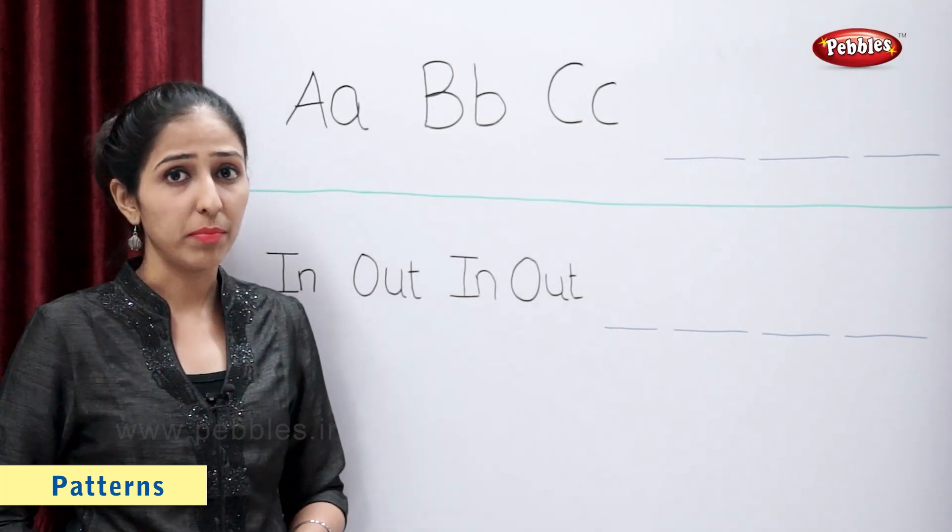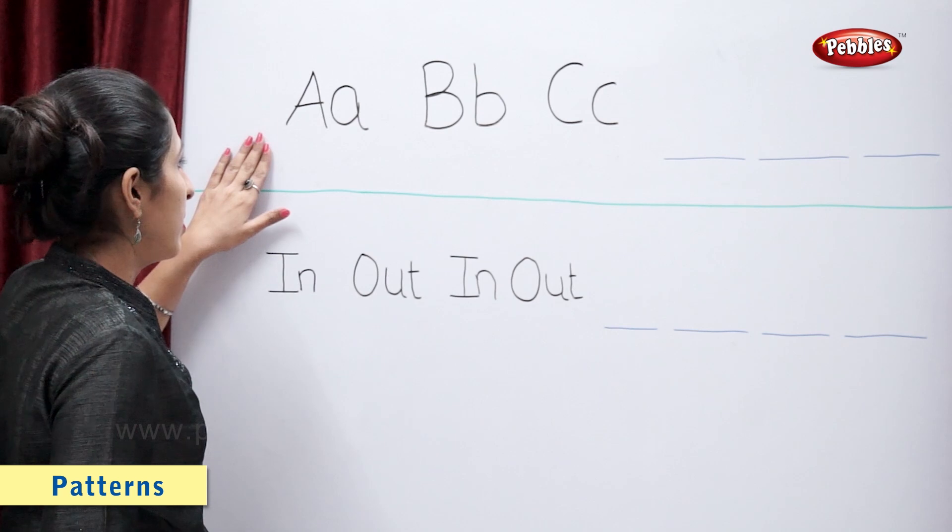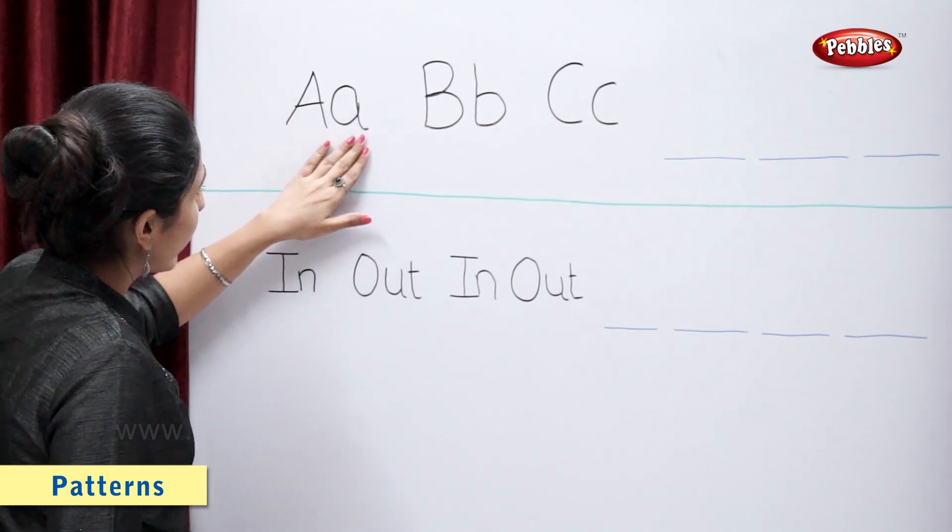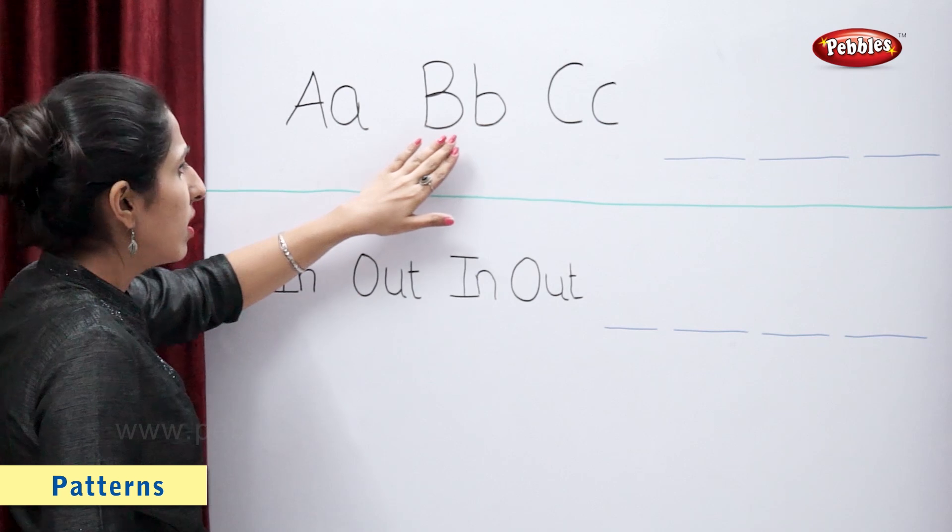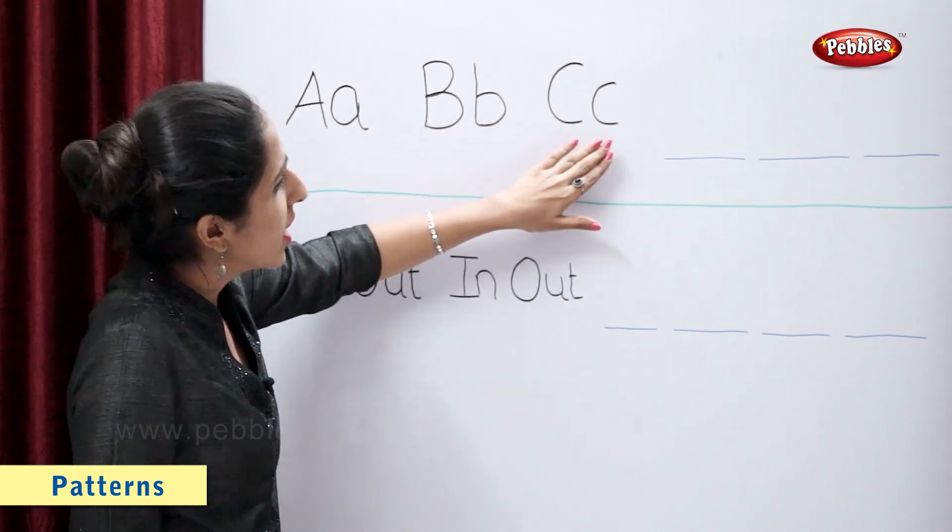Now, let's take some examples with letters. In the first example, we have capital A, small a, capital B, small b, capital C, small c.